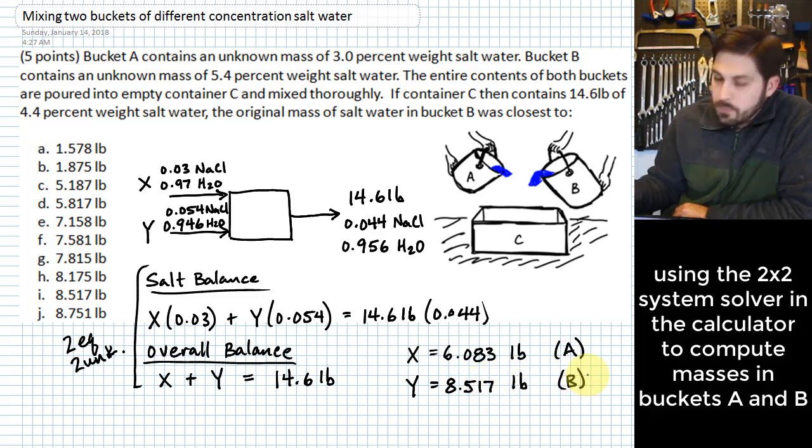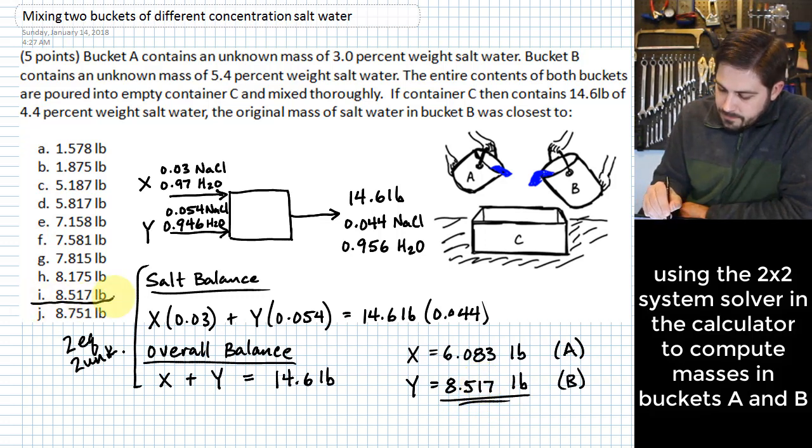Now we need to think about which thing we were actually supposed to be trying to find. The original mass of salt water in bucket B was closest to. That would be this value right here 8.517. And we would answer I.